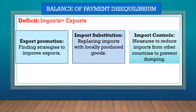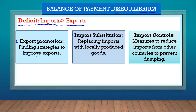If there's a balance of payment disequilibrium — meaning exports are not equal to imports — it's not a problem as long as exports are more than imports. It only becomes a problem if we have a deficit, where imports are more than exports. So what could the government do? The government could introduce export promotion strategies to improve exports, import substitution strategies to replace imports with locally produced goods, and import controls to reduce imports from other countries, which could also prevent dumping.